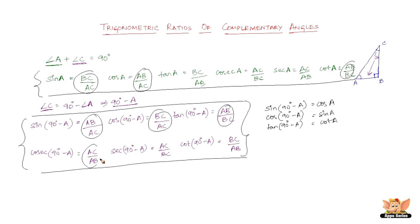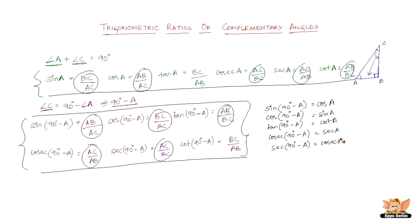Taking AC over AB, we see that cosecant of (90 degrees minus A) equals secant A. AC over BC shows that secant of (90 degrees minus A) equals cosecant A. And finally, BC over AB gives us cot of (90 degrees minus A) equals tan A.